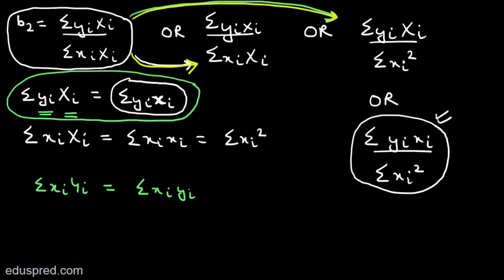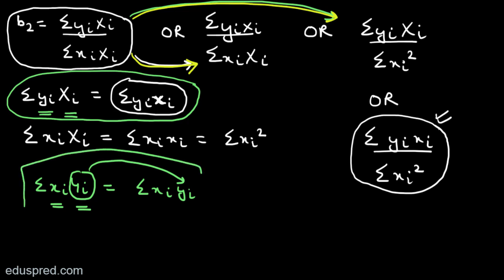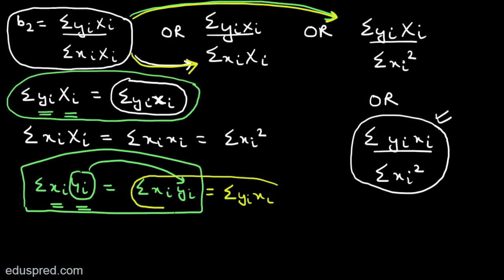On the left hand side, one variable is in deviation form — that is variable x, since we have small xi — and the second variable is capital Yi, which is not in deviation form. Using the same logic, we can replace capital Yi with small yi. And as you know, summation small xi multiplied by small yi is the same as summation small yi multiplied by small xi — it does not matter in what order I write x and y. These are one and the same thing.